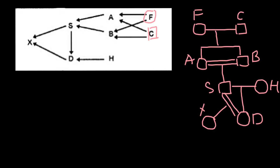Now we have to find the inbreeding coefficient of the proband X. A is female, B is male, S is male, D is female, H is female, and X is female. Our problem: what is the inbreeding coefficient of individual X, the result of the mating of an inbred father with its daughter?